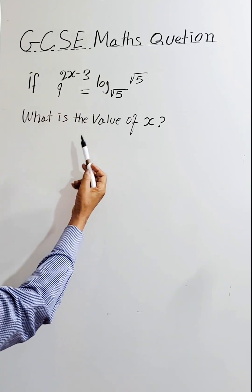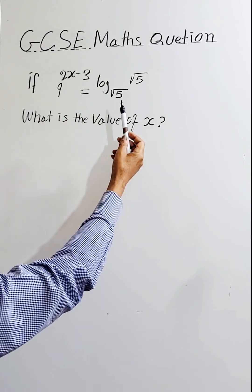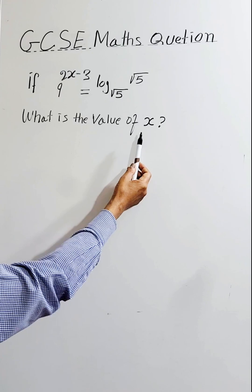If 9 to the power of 2x minus 3 equals log root 5, base root 5, what is the value of x?